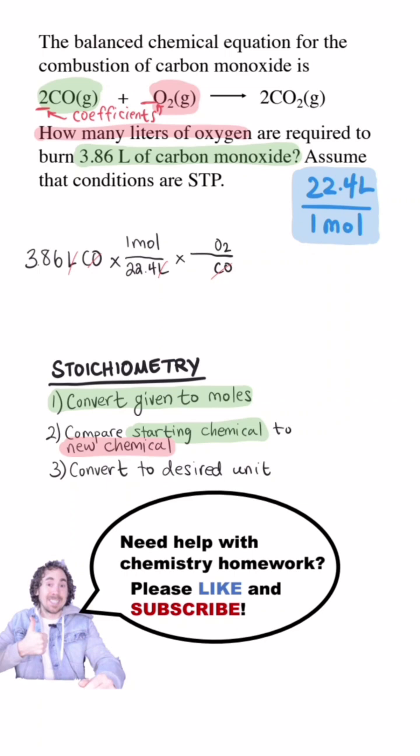From the equation, the ratio is one oxygen for two carbon monoxide. Finally, I want to convert my answer to liters of a gas so I'll use the relationship again but since I want my answer in liters that should go on the top and one mole on the bottom. So we get 1.93 liters of oxygen gas.